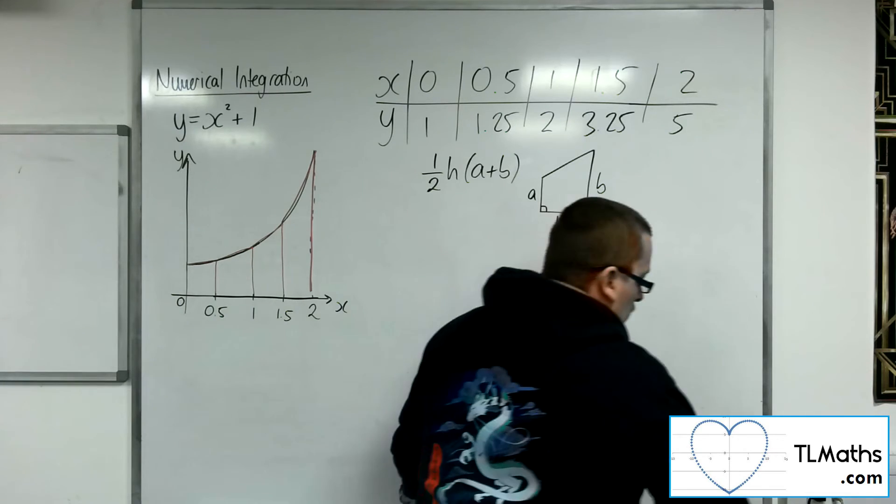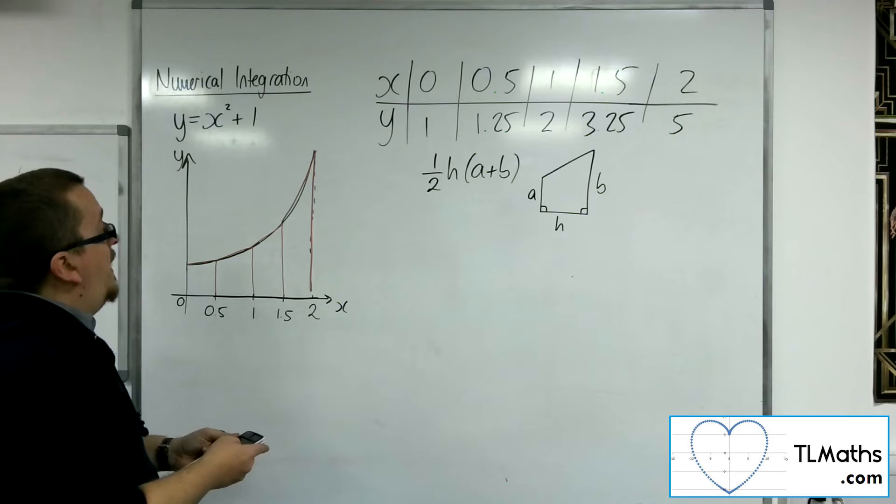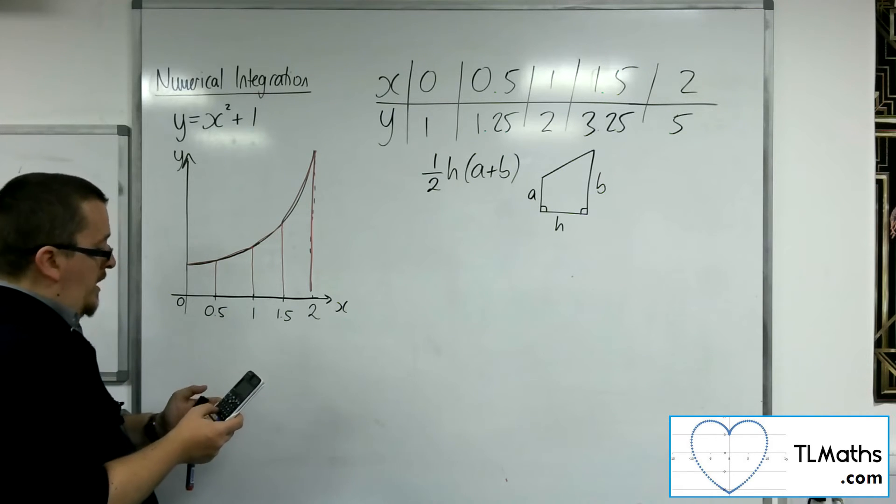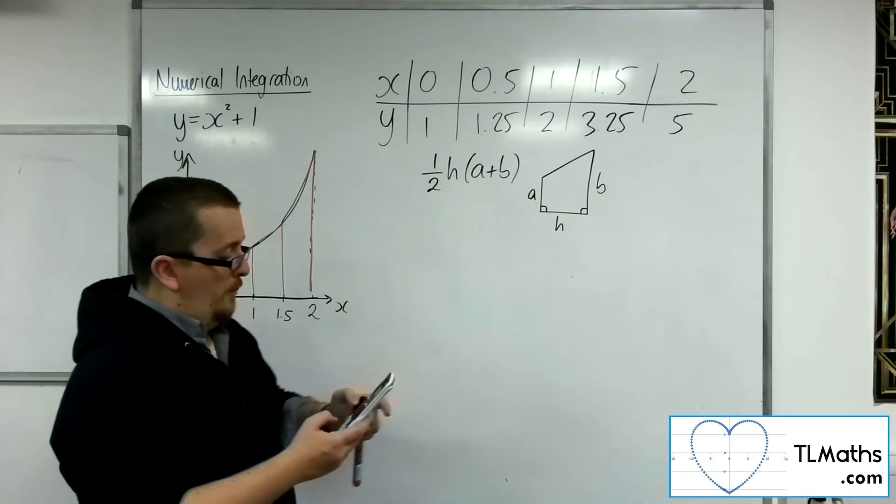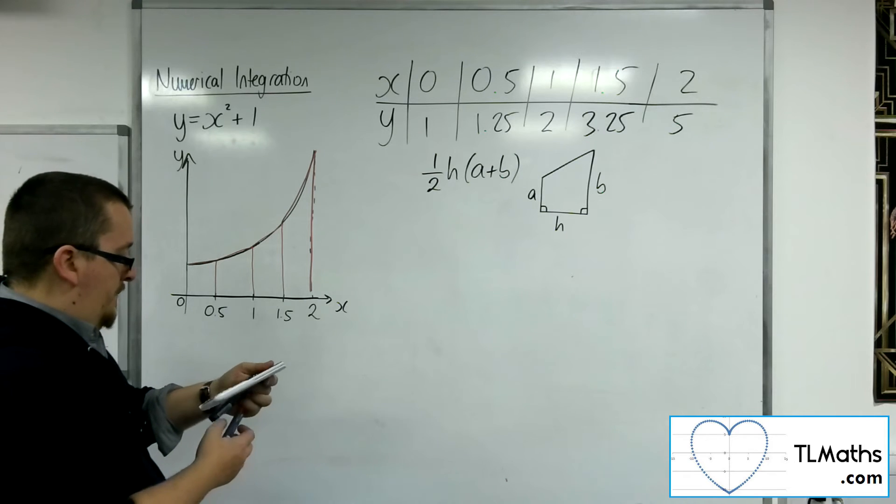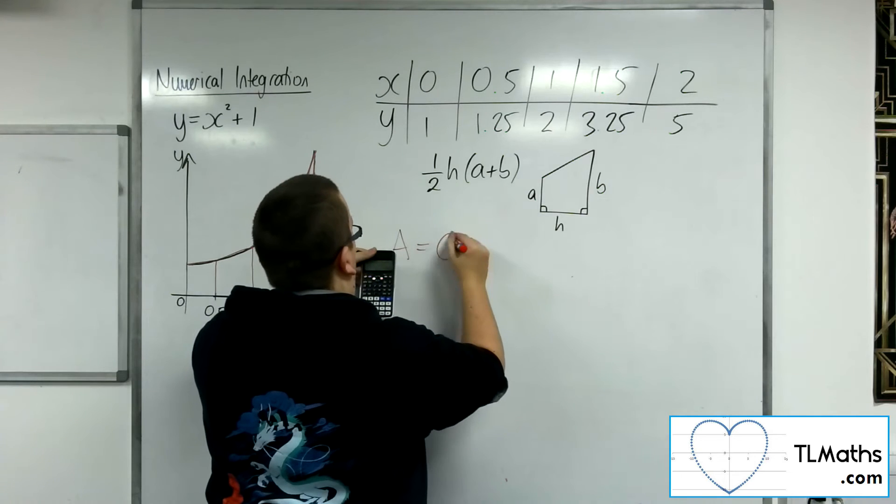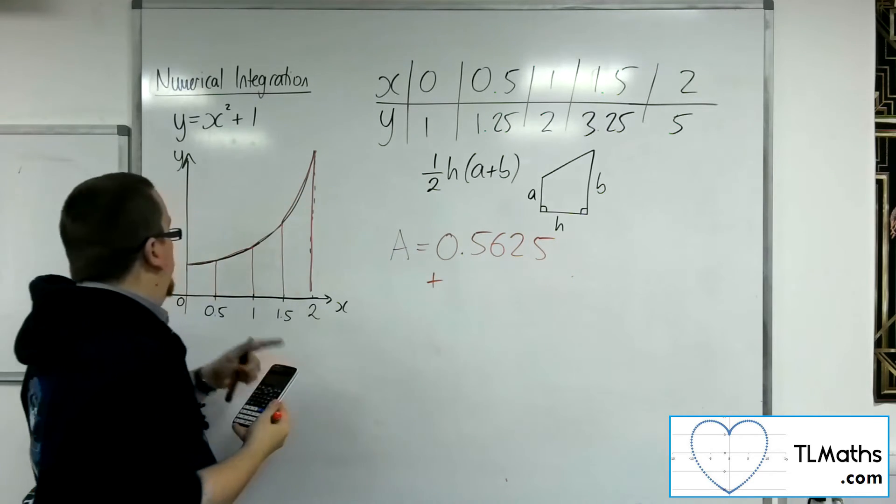We've got the area of the first one. So that would be 1 half times the width of the strip, 0.5, times by the first and the second, so 1 plus 1.25. So that is 0.5, so the area will be 0.5625. That's the first one.